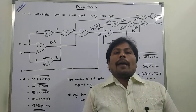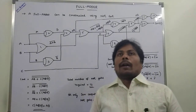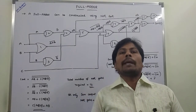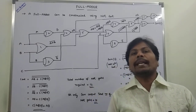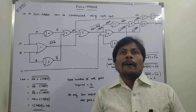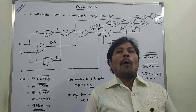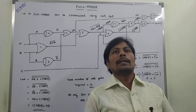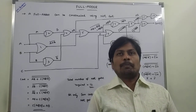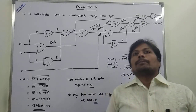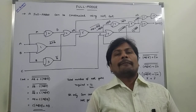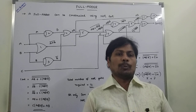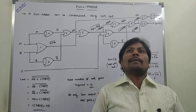Today I am giving a lecture on full adder using NAND gates — how we are implementing the full adder using NAND gates. A full adder is a combinational circuit that is used for performing addition of three inputs. A full adder produces two outputs: one is the sum output and another one is the carry output.